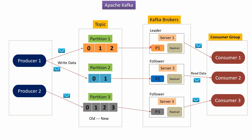The topic has partition 1, partition 2, and partition 3. Here you can see producer 1 and producer 2. Producer 1 writes data to two partitions and producer 2 writes data to one partition. Here you can see the consumer group which has 3 consumers: consumer 1, consumer 2, and consumer 3.